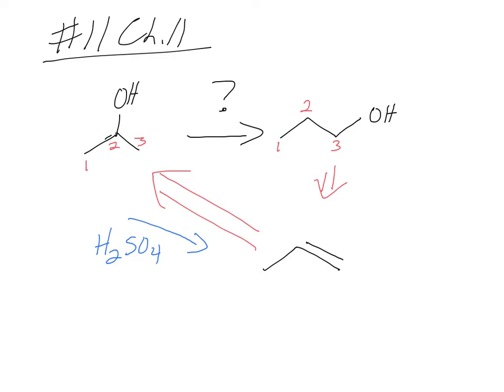And then if I want to get the anti-Markovnikov product — the alcohol, the OH on the less substituted carbon — what do I need to do? BH3. They separate this out: BH3 is one step, and then H2O2/OH- in the second step. But you could always say it's just one step — it's fine.